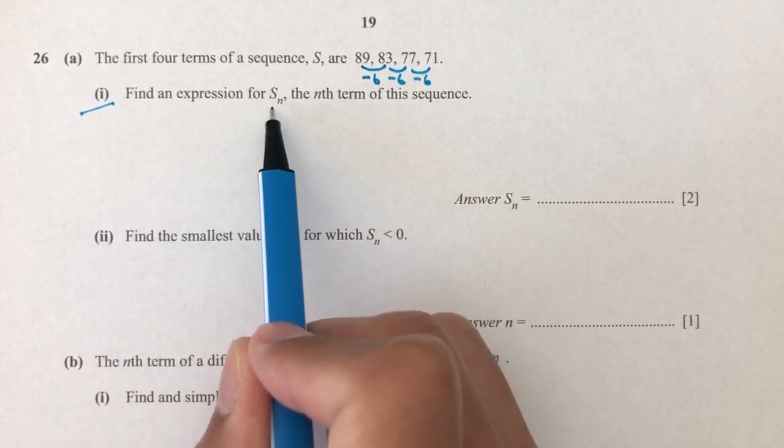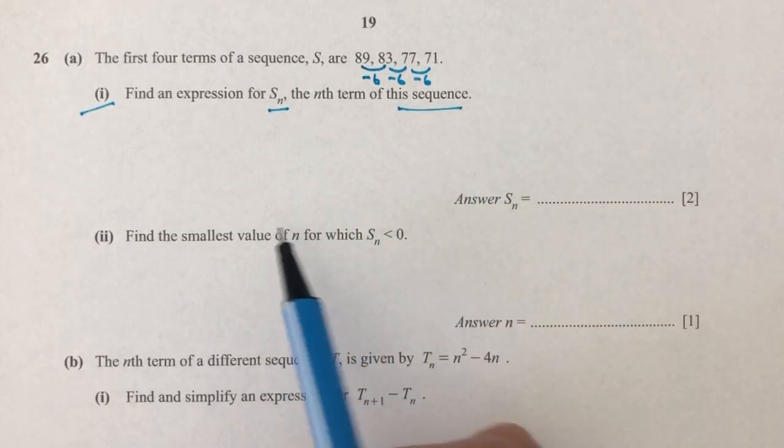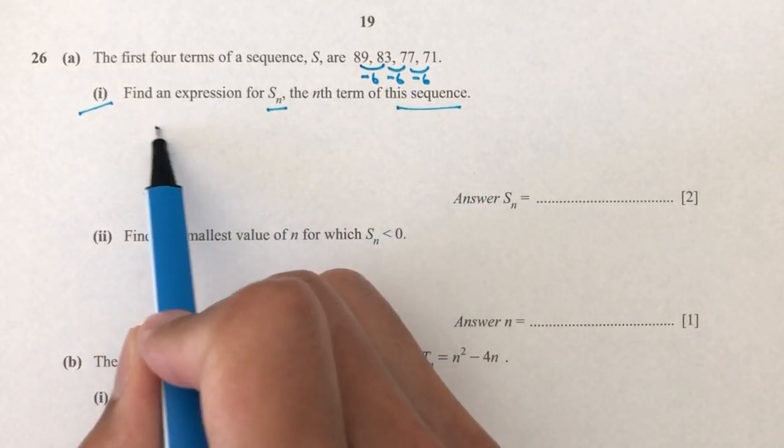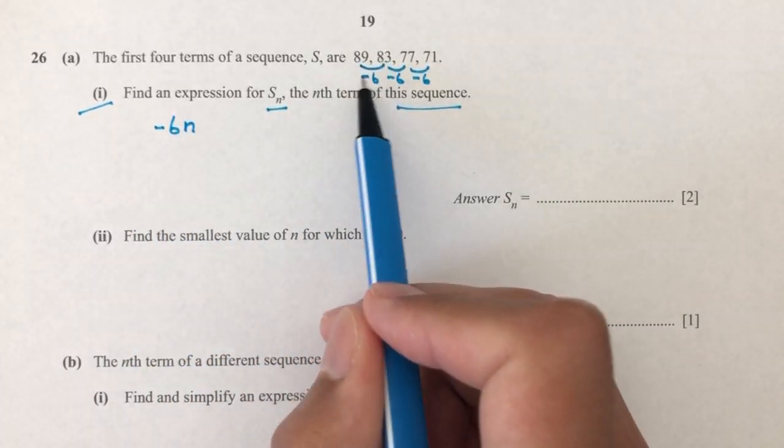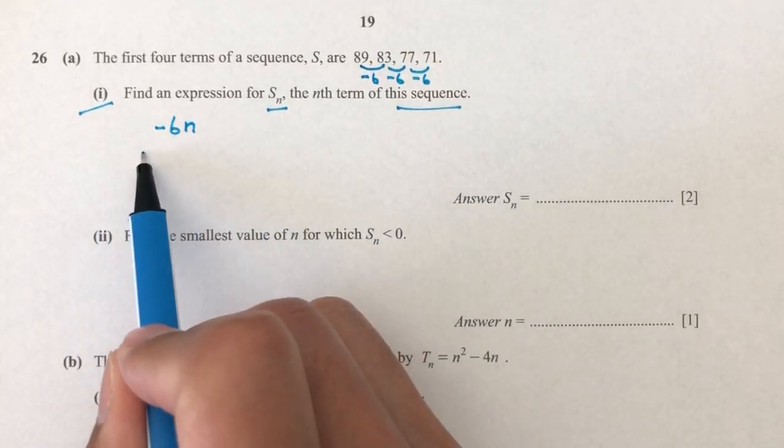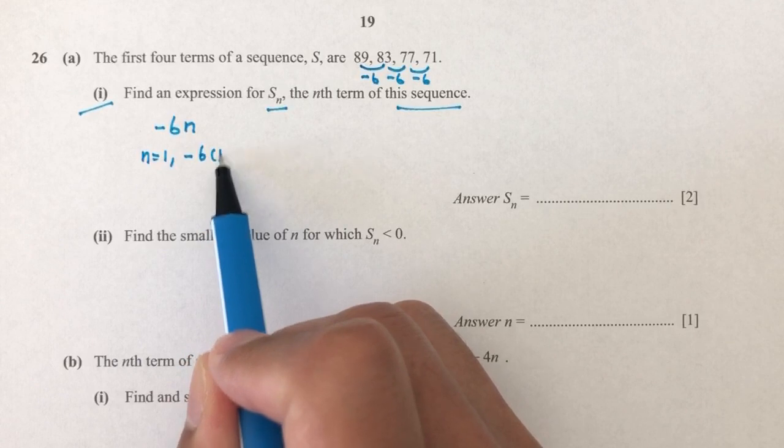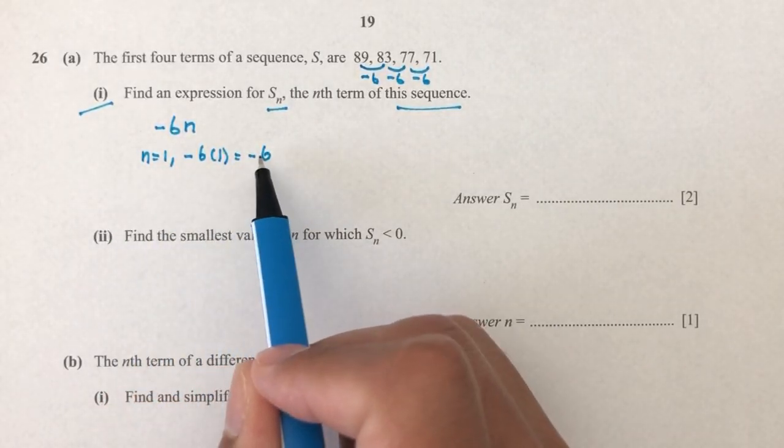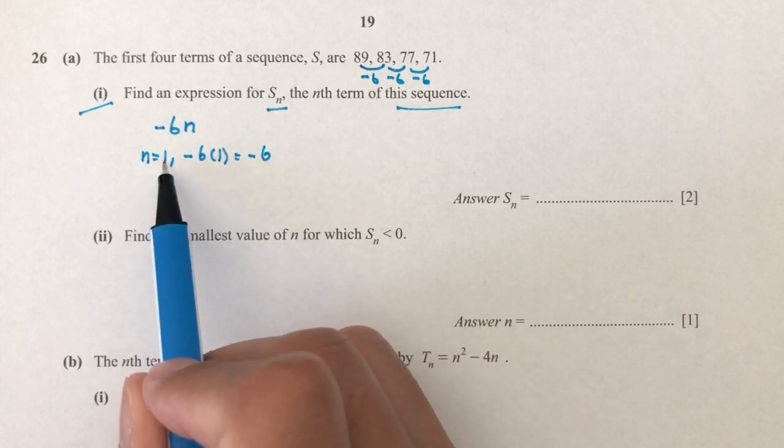Question part one: find an expression for S_n, the nth term of this sequence. As always when you have a common difference, you write down minus 6 times n. Now we know the first term equals 89. If you replace n by 1, you'll have minus 6 times 1, which is minus 6.